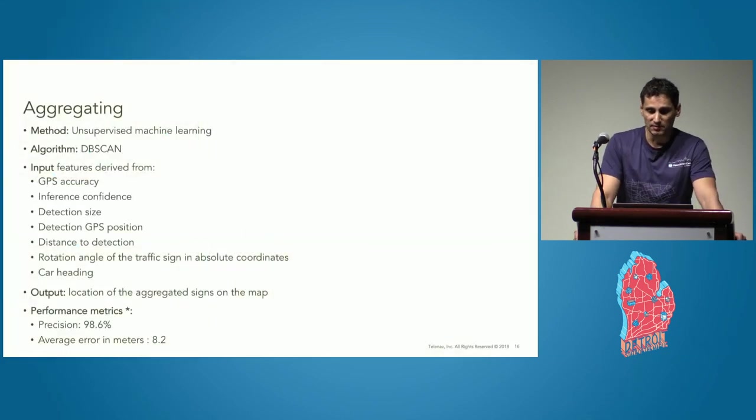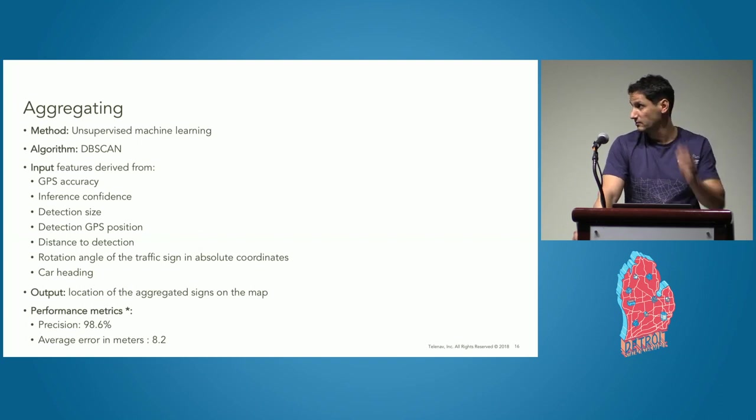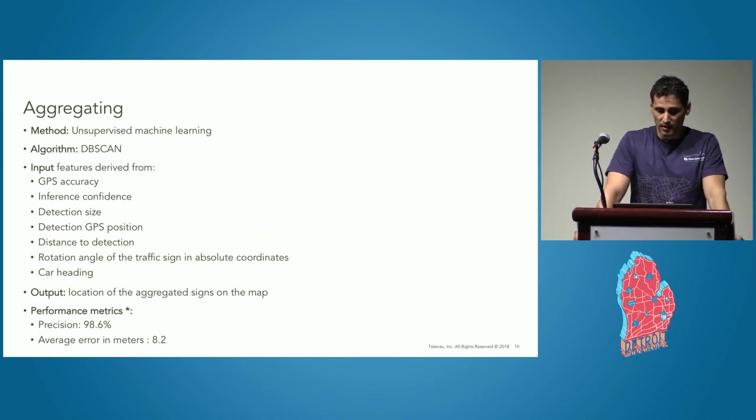For those interested in some details, the slide shows them. It's important to mention that we determine groups of signs, technically named being the clusters. And for that, we are using far more features besides traffic sign geolocations. The technical cluster center will be our final detection, detected traffic signs. And only those final results will compare in the next step with the OSM.